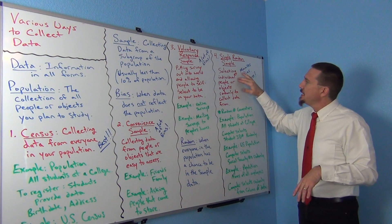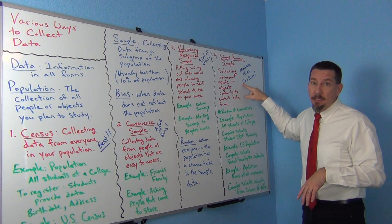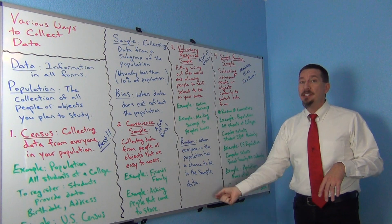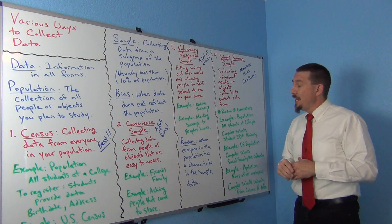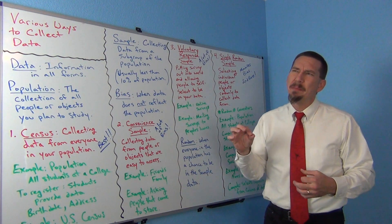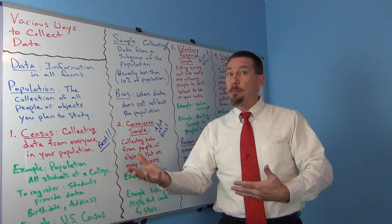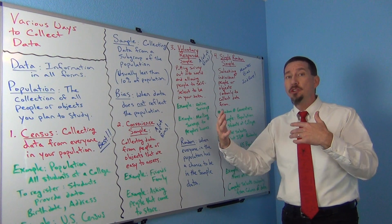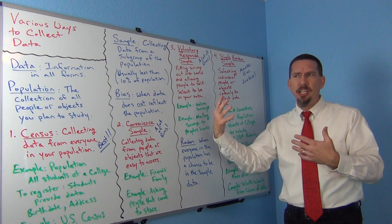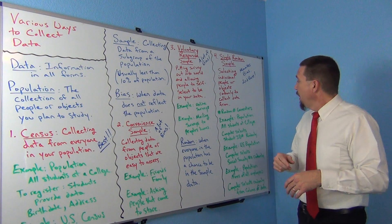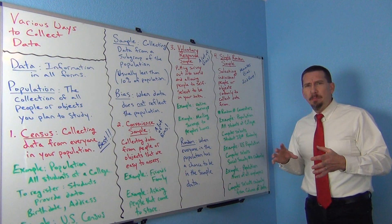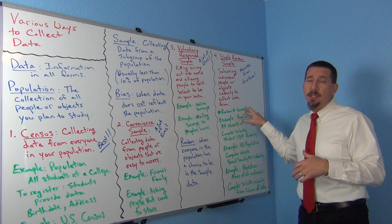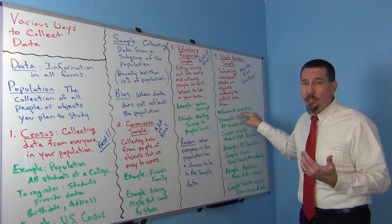A simple random sample means you're selecting individual people or objects randomly, so again everyone in the population had a chance to be chosen. This usually means you have to somehow number your population — you need access to your entire population and you give each person or object a number. We use random number generators in computer programs a lot nowadays to do this.